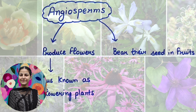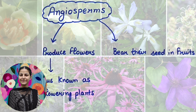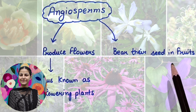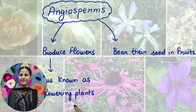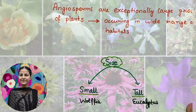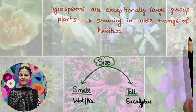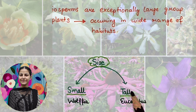Today we will talk about Angiosperms. We will see how many different plants belong to the Angiosperms, and how Angiosperms are different from Gymnosperms. We will talk about flowers, seeds from fruit, and flowering plants. The Angiosperms are a very big group in which we will see a lot of plants in very different habitats.